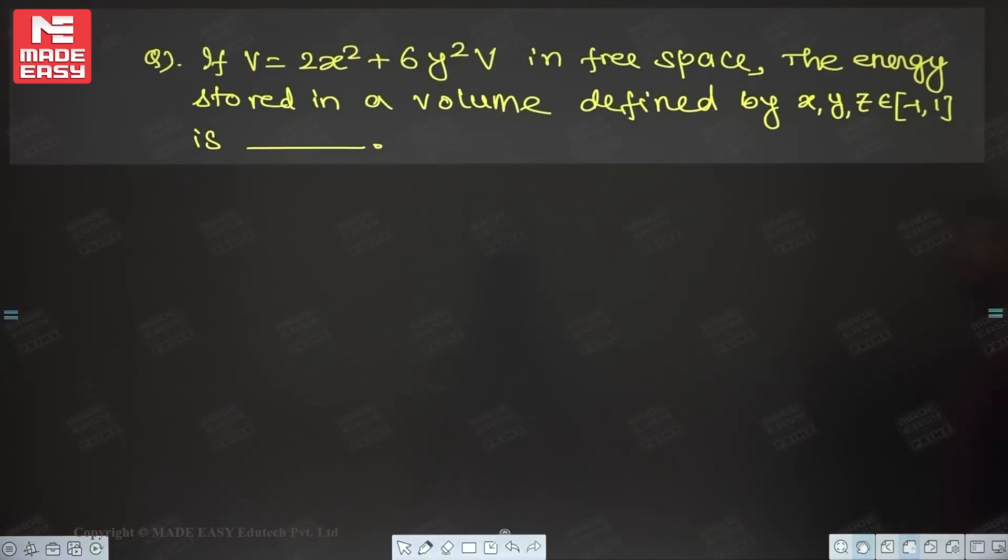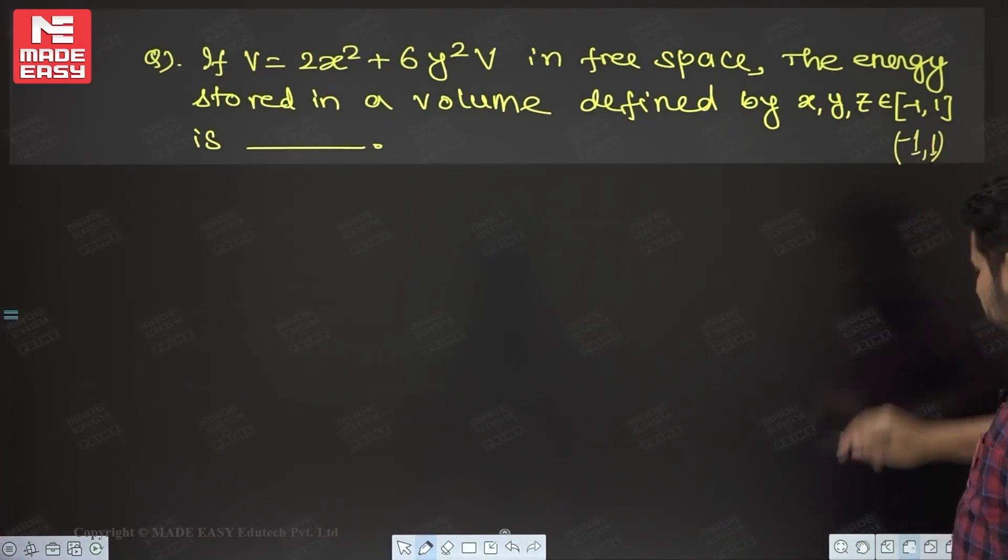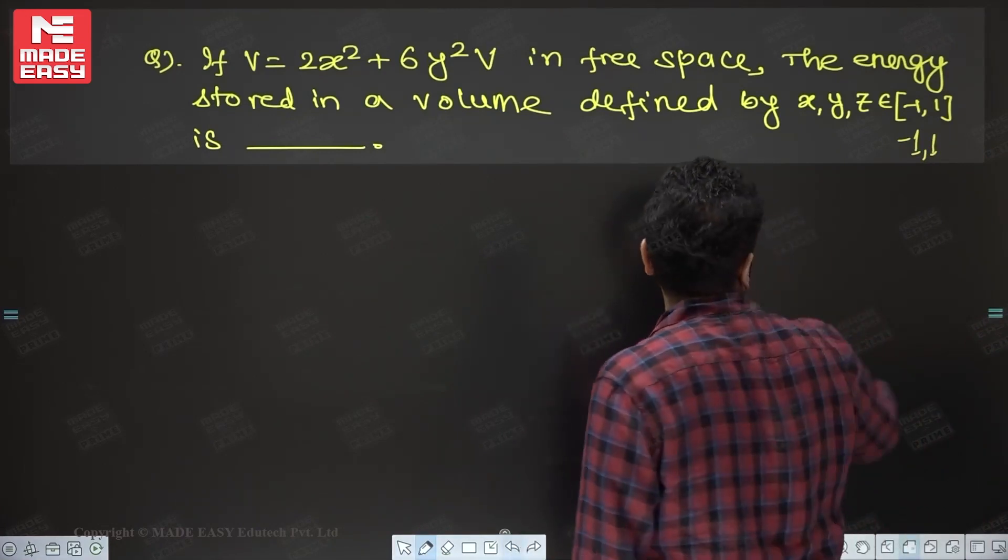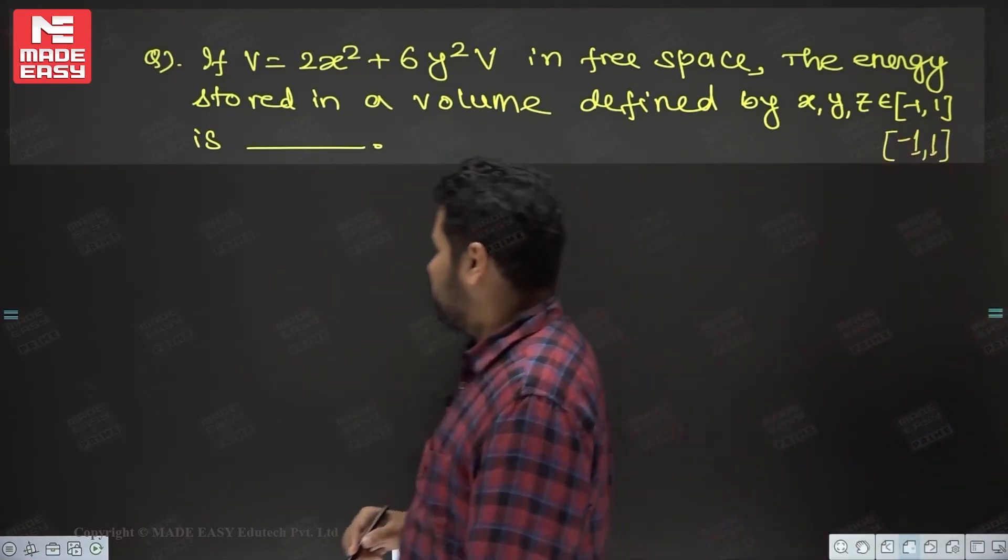If V is equal to 2x² + 6y² voltage in free space, the energy stored in a volume defined by x, y, z from minus 1 to plus 1, this is the closed interval. They are asking what is the value.